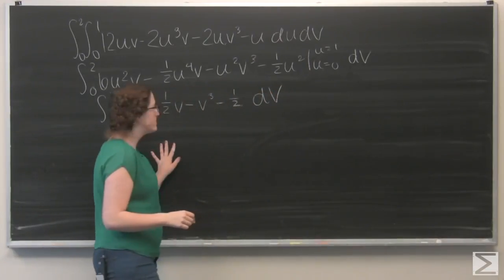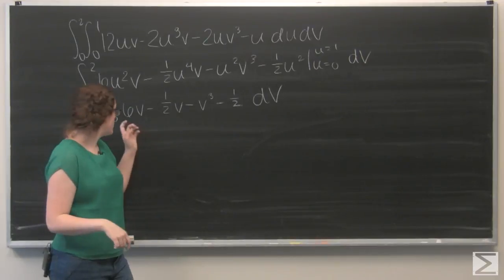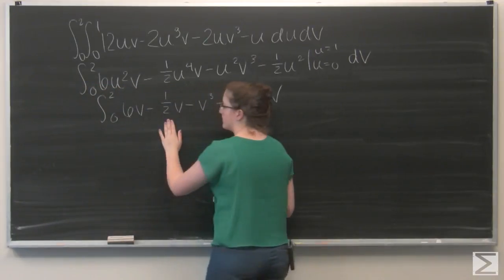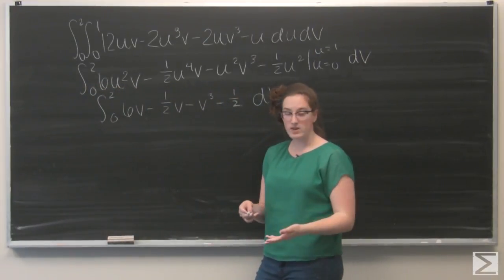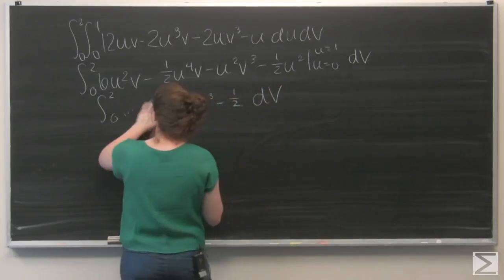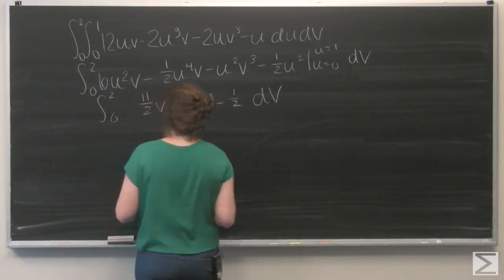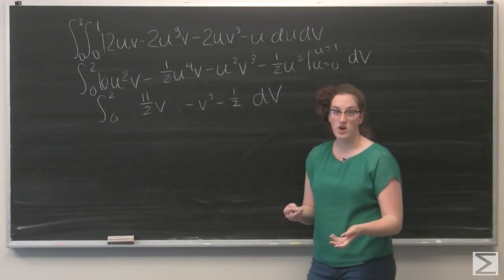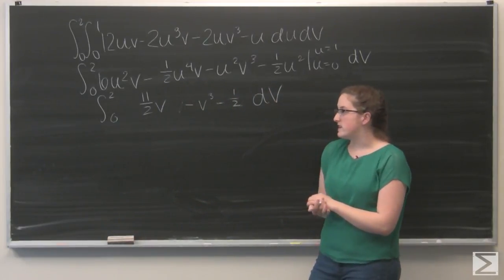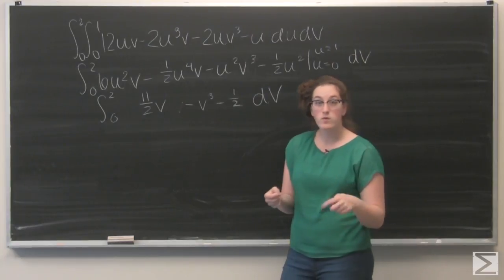Now, let's combine things a little bit before I integrate with respect to v. I have 6v minus 1 half v, which I can rewrite to be 11 halves v. And that's all the combining I can do. So, let's go ahead and integrate. 11 halves v becomes 11 fourths v squared.